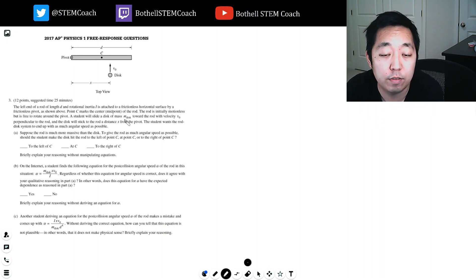A student will slide a disk of mass M toward the rod with velocity V0 perpendicular to the rod and the disk will stick to the rod at distance X from the pivot. The student wants the rod disk system to end with as much angular speed as possible. Suppose the rod is much more massive than the disk. Should the student make the disk hit the rod to the left of point C, at point C, or to the right?